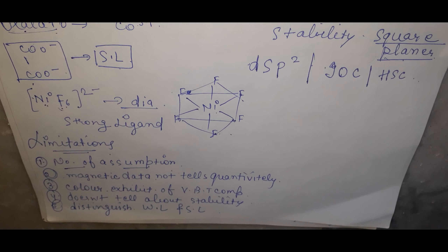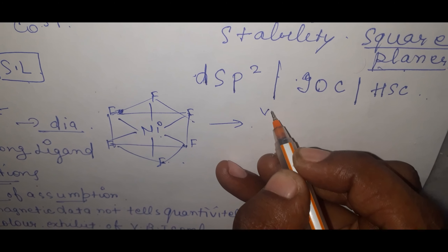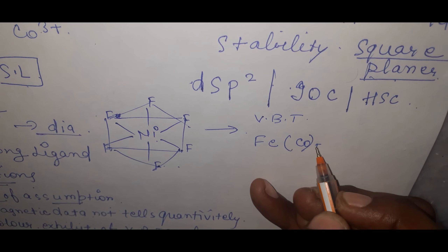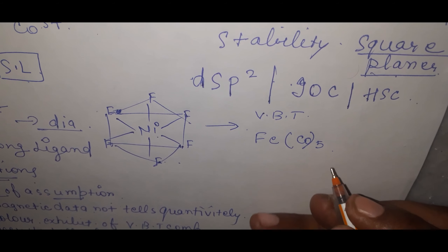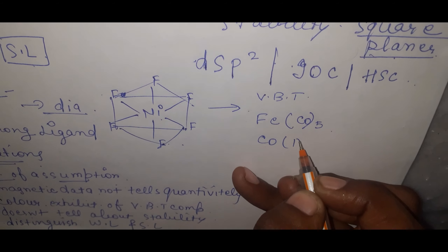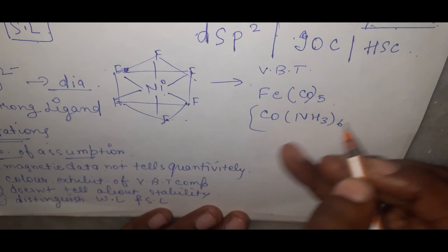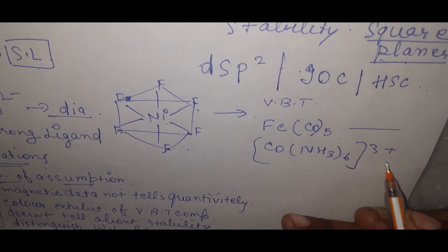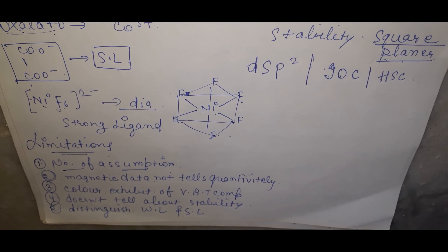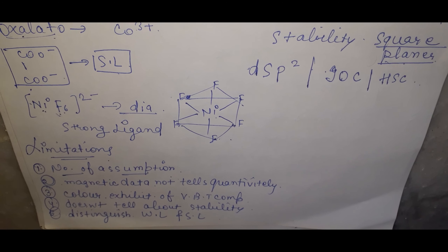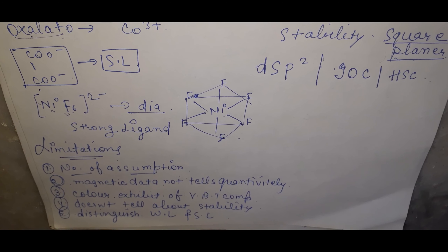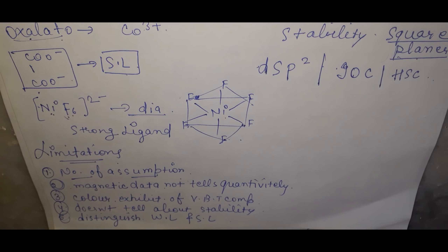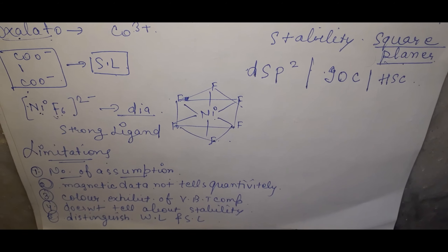These limitations are addressed by the Spectrochemical series and Crystal Field Theory. Some practice examples to explain VBT properties include [Fe(CO)₅] and [Co(NH₃)₆]³⁺. This concludes the lecture on Valence Bond Theory — thank you for watching.